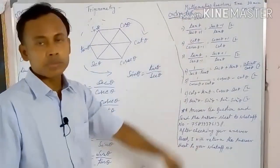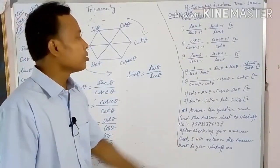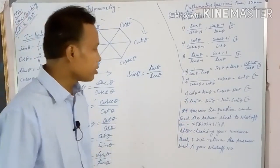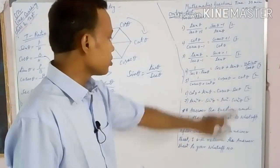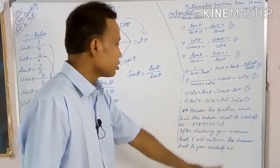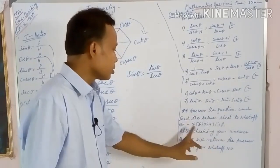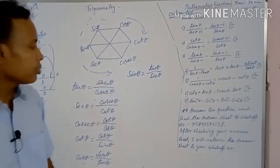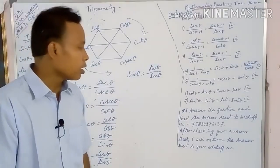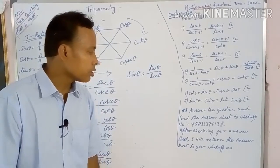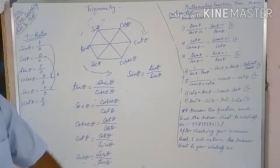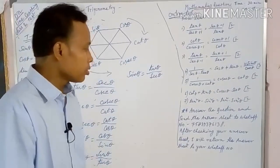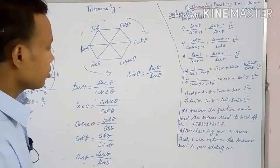This is your online question paper — solve it, answer the questions, and send the answer sheet to WhatsApp number 7583937613. After checking your answer sheet, I will return feedback to your WhatsApp.